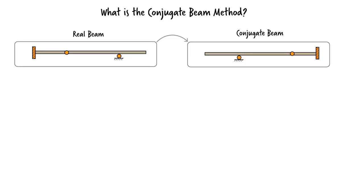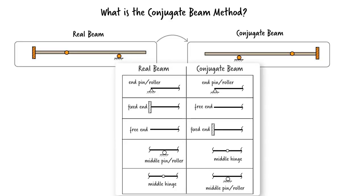How do we do this conversion? By using this table. For example, as you can see here, a fixed end in the real beam converts into a free end in the conjugate beam. A free end converts into a fixed end, an internal hinge turns into a roller, and so on.